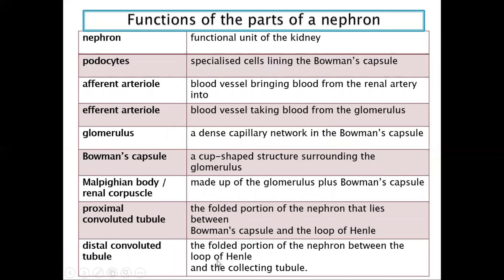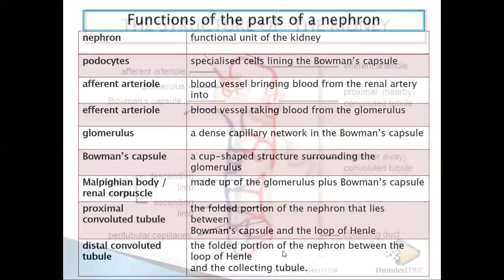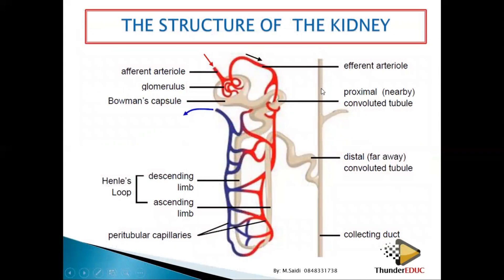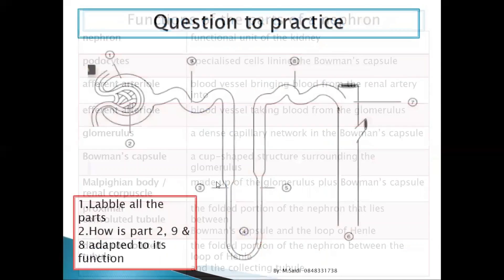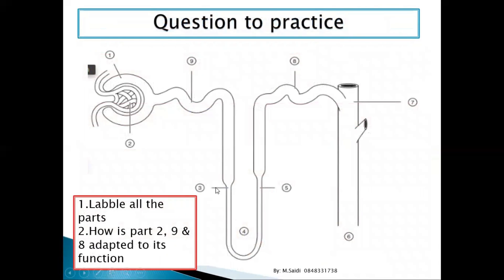The distal convoluted tubule is the folded portion of the nephron between the loop of Henle and the collecting duct. So the fold between the loop of Henle and the collecting duct is what we call the distal convoluted tubule.